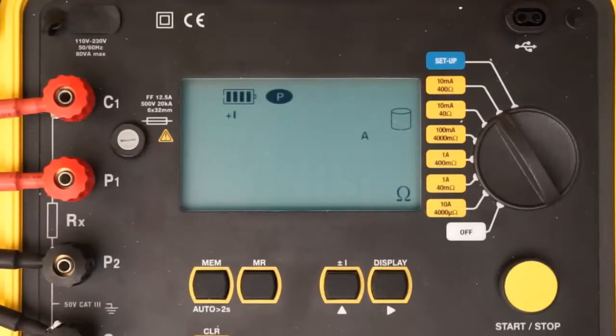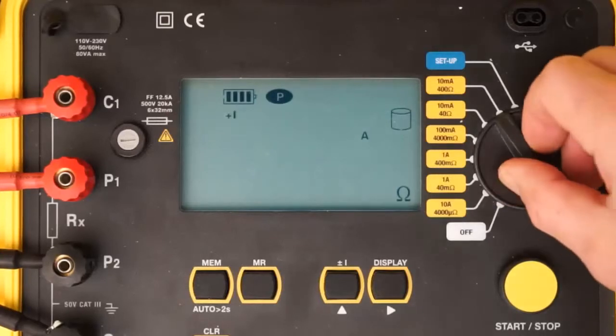If the resistance you are testing is unknown, we suggest starting with the instrument's highest resistance range and then lowering the range until you obtain meaningful results. In our demonstration, we are using a shunt of known resistance, so we will turn the dial to the 10 amp, 4000 micro-ohm setting.